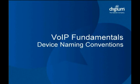When we first walked through how to set up an IP phone with Asterisk in an earlier chapter, we touched on the topic of device naming conventions. We'll spend some time now giving a more thorough look at that topic. We'll start by talking about the limitations enforced by Asterisk and then recommend some best practices. Finally, we'll examine several common device naming strategies, looking at strengths and weaknesses of each.